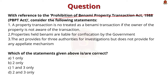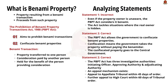Next question: about the Prohibition of Benami Property Transaction Act 1988. Three statements are given and you have to find which are correct. Benami property is any property which is the subject matter of a benami transaction, and also includes the proceeds from such property. The Prohibition of Benami Property Transaction Act 1988 aims to prohibit benami transactions and confiscate benami properties.